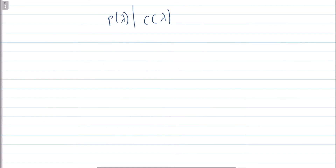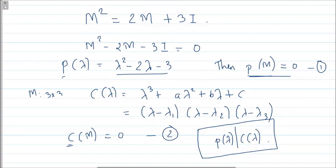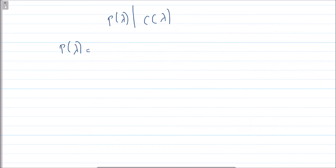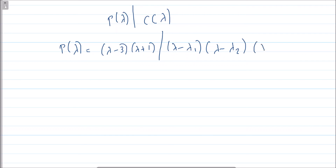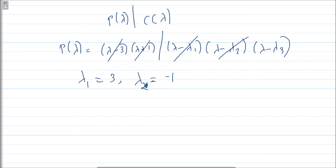Now p(λ) = λ² - 2λ - 3 = (λ - 3)(λ + 1). So (λ - 3)(λ + 1) divides (λ - λ₁)(λ - λ₂)(λ - λ₃). This means one eigenvalue is 3 (from λ - 3 = 0) and one eigenvalue is -1 (from λ + 1 = 0). We now have two of the three eigenvalues.